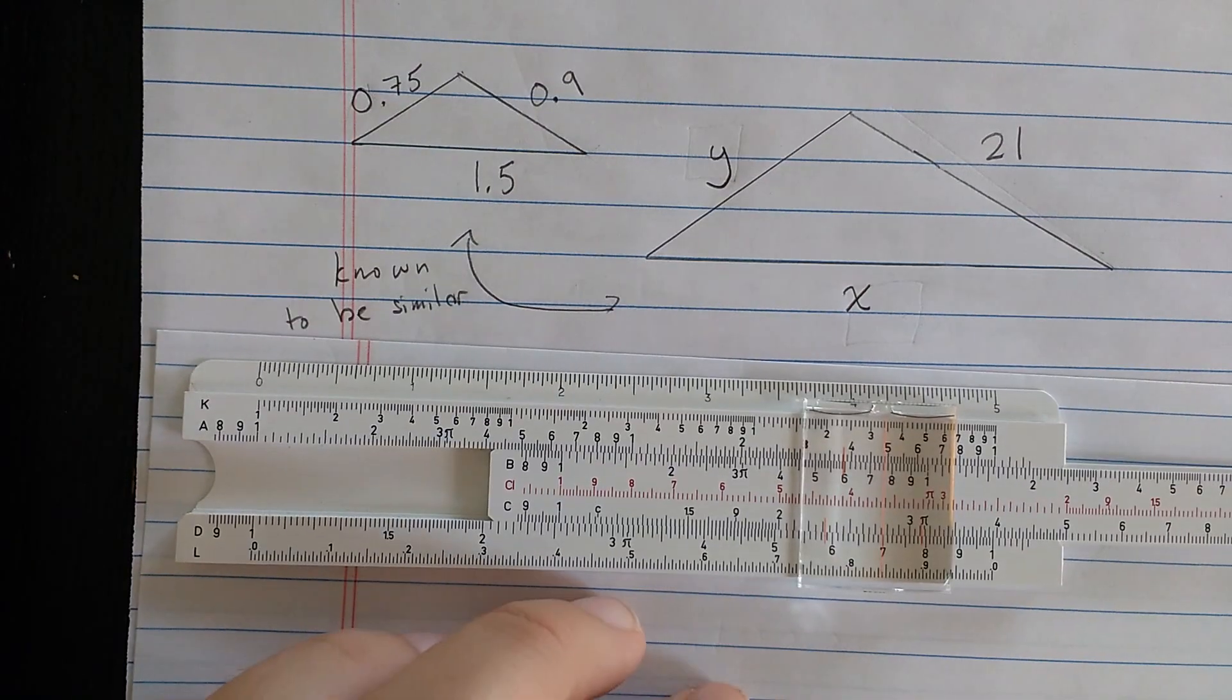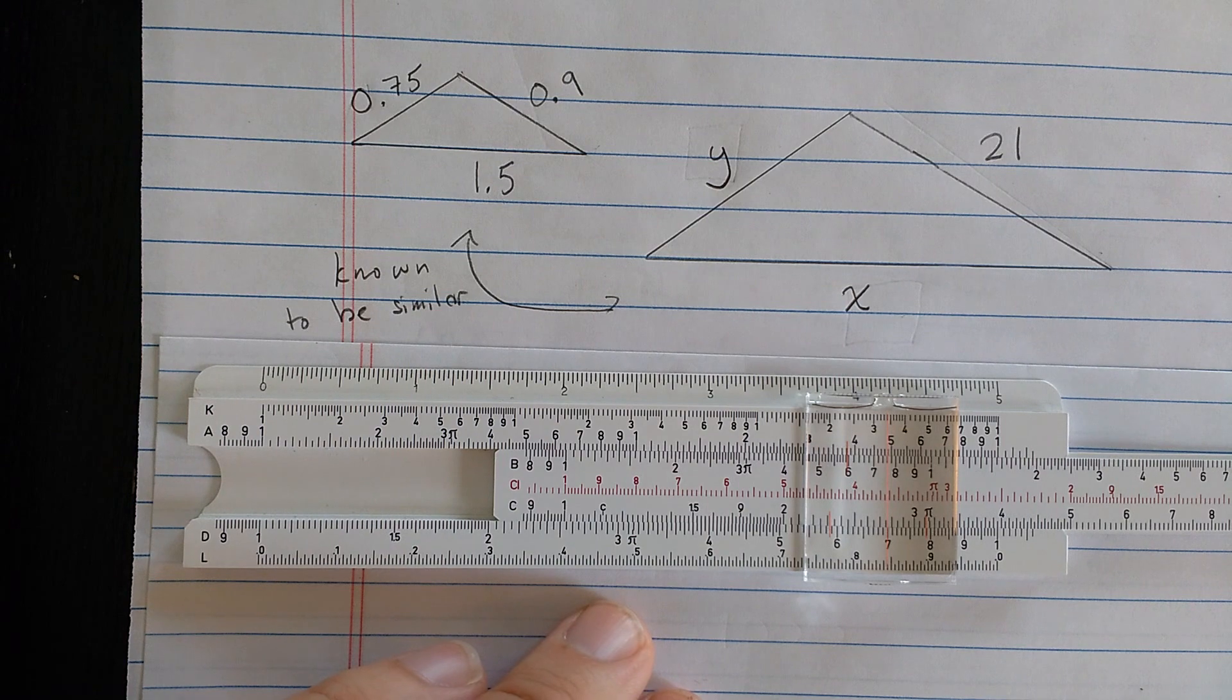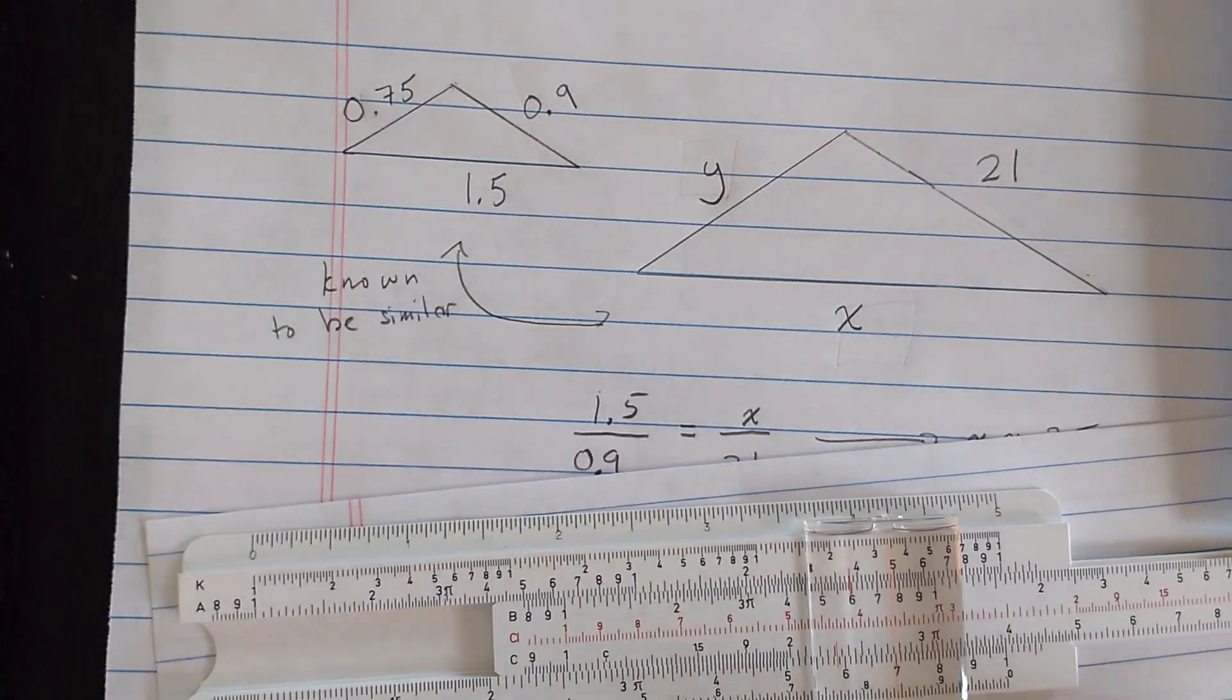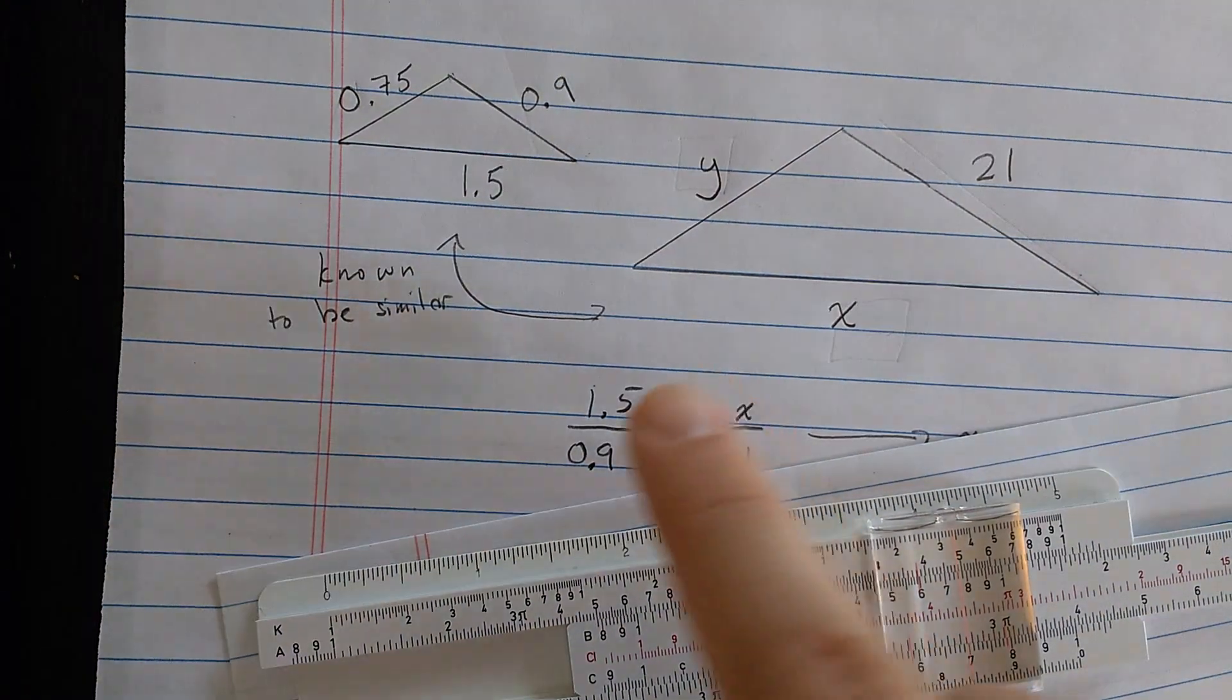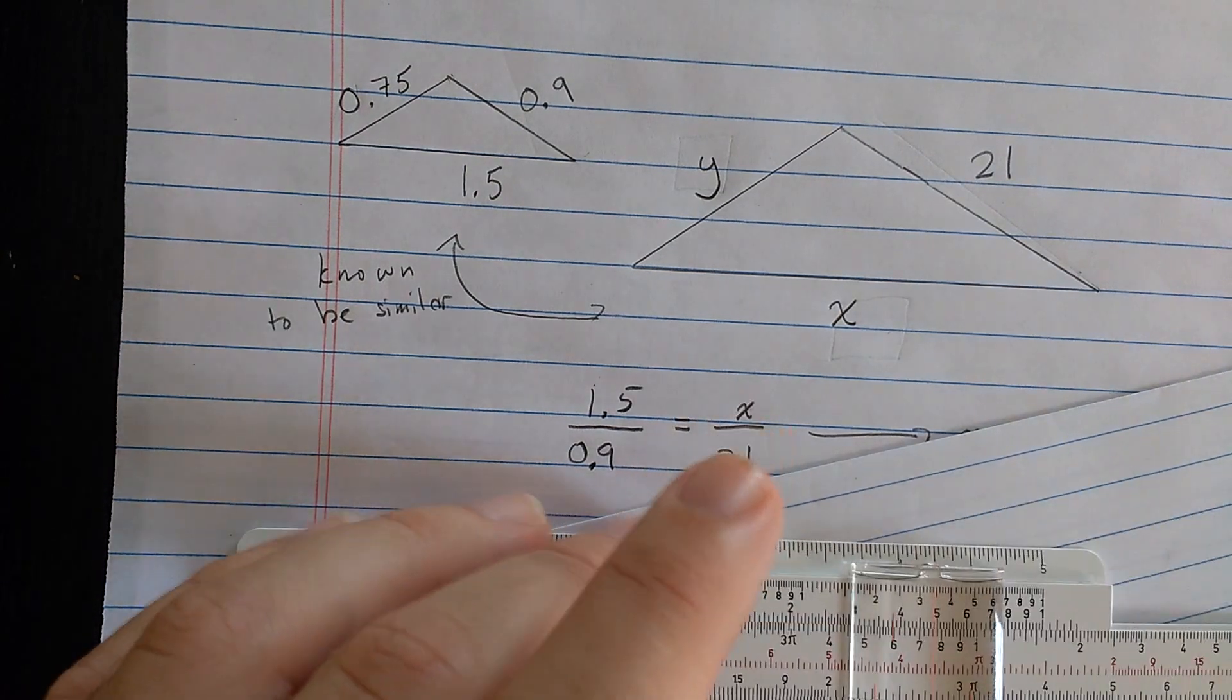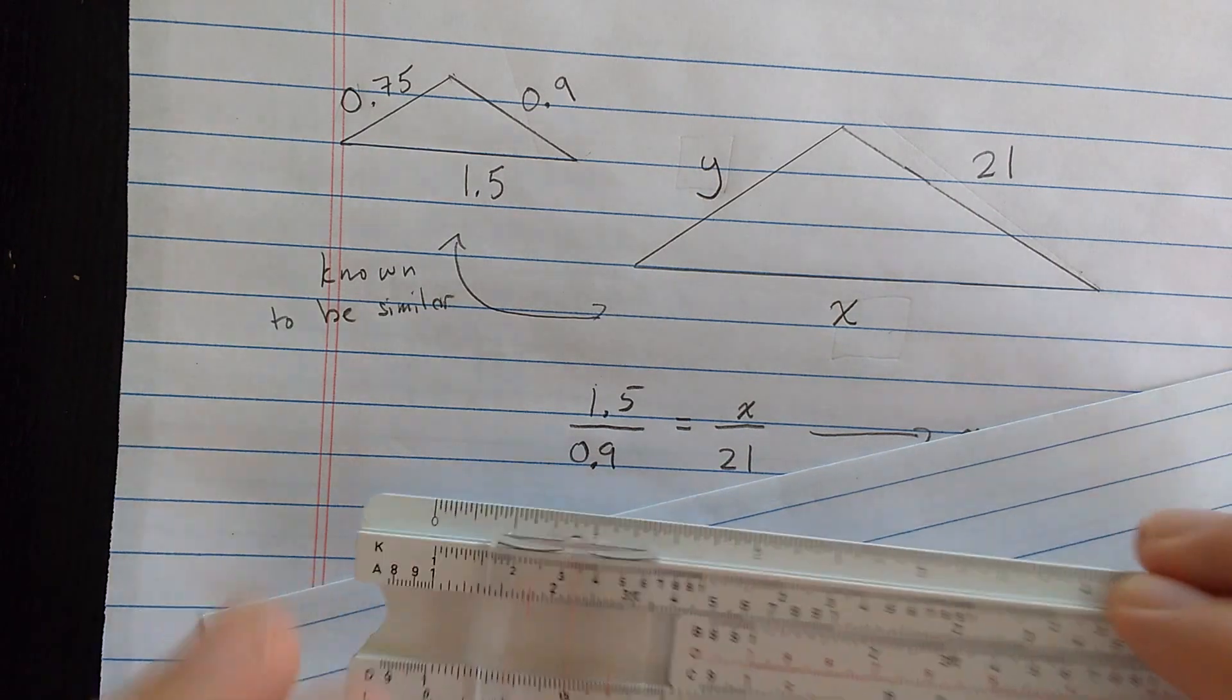Now, here are two triangles. I might not have done the best job drawing them. You can imagine these are at different scales. But I know for some reason that these are similar, maybe by measuring the angles. So I want to solve for these sides on this triangle, the X and the Y. So let's cover here. Okay. So I want to solve that proportion. 1.5 over 0.9 is something over 21, because those sides should have the same ratio in both triangles. So let's see. I'll find the 1.5, then I'll find the 9.